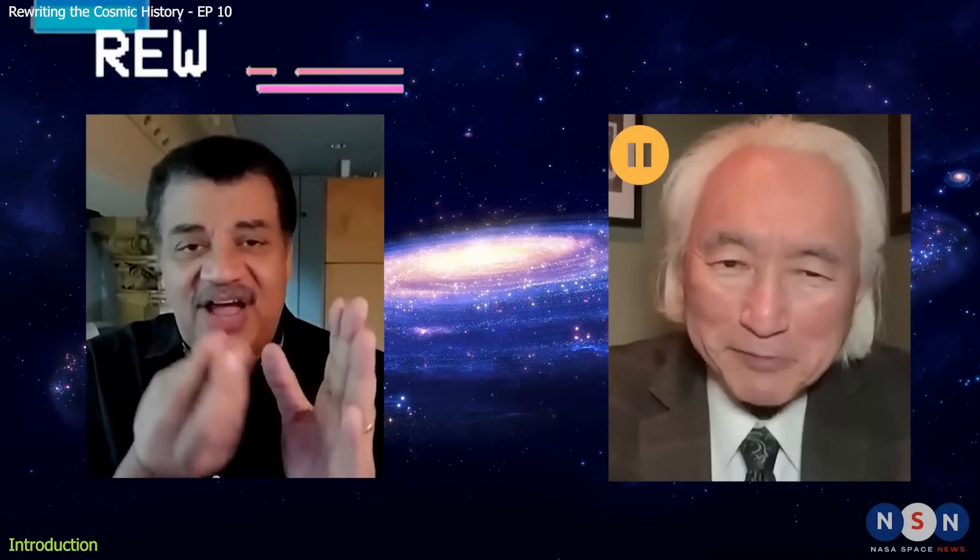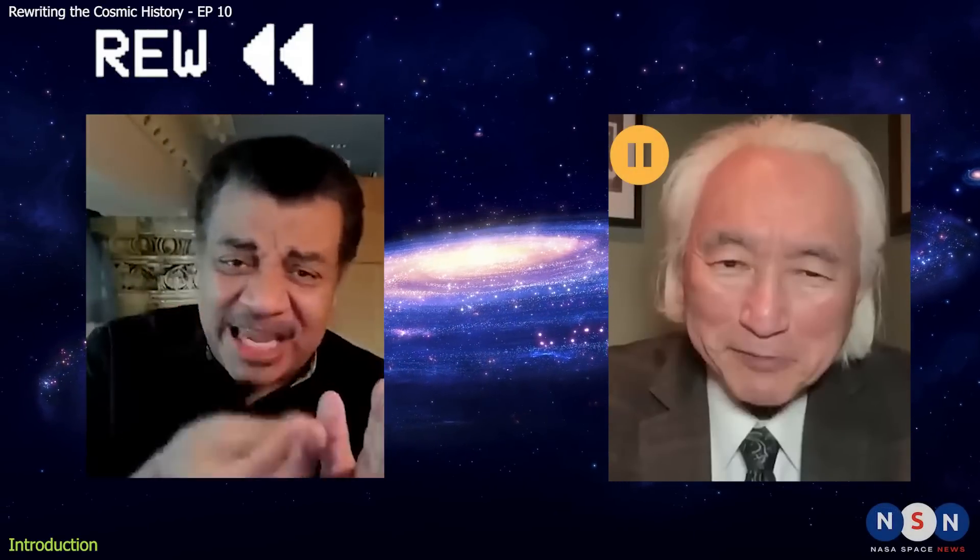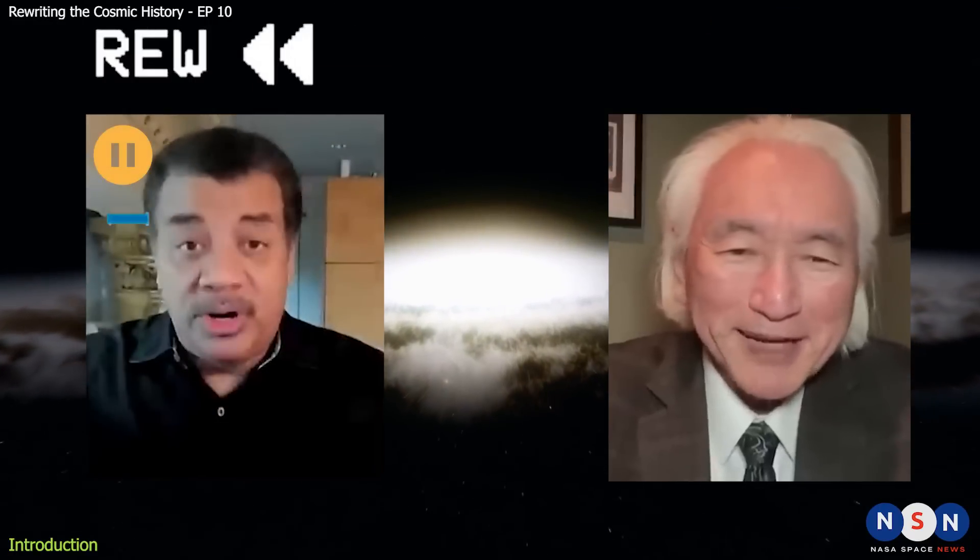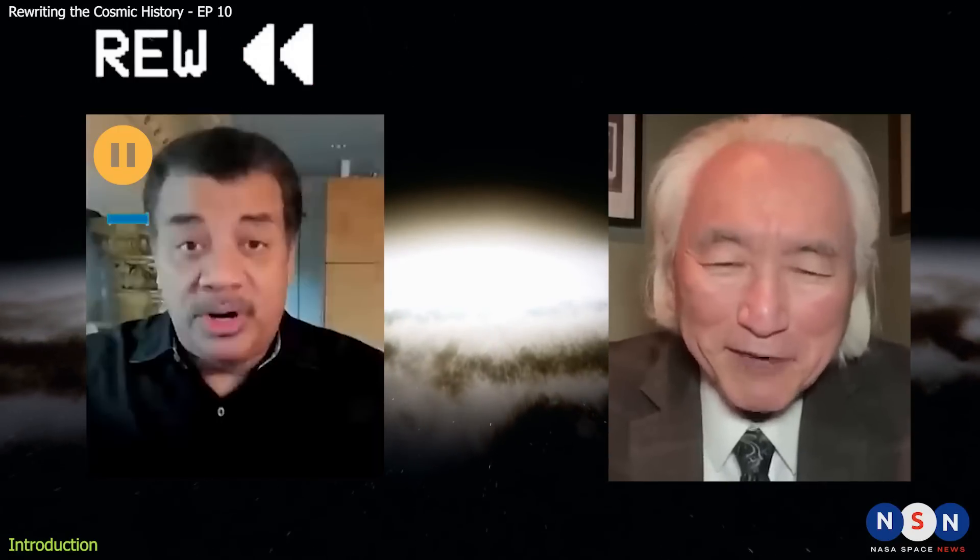And now the James Webb Space Telescope is identifying objects in the dark ages that by best measurements we have are large, fully developed galaxies. So who ordered that? James Webb Space Telescope is upsetting the apple cart. All of a sudden we realize that we may have to rewrite all the textbooks about the beginning of the universe.